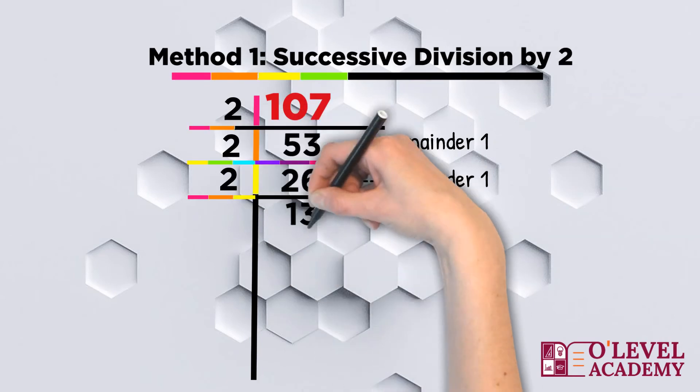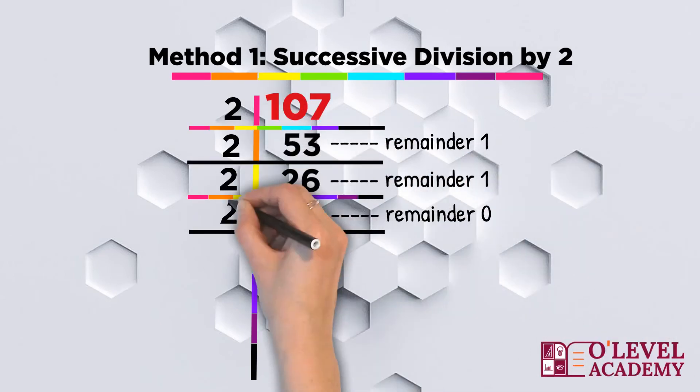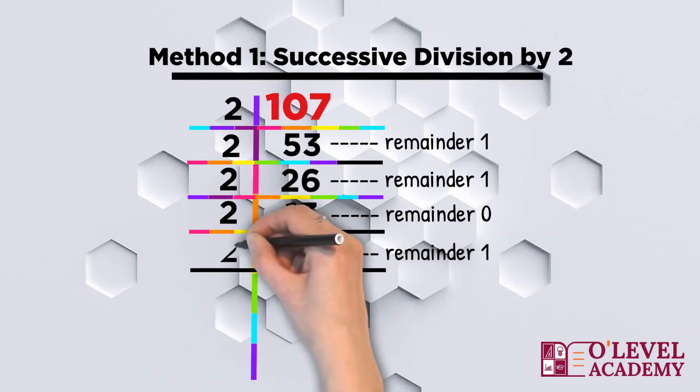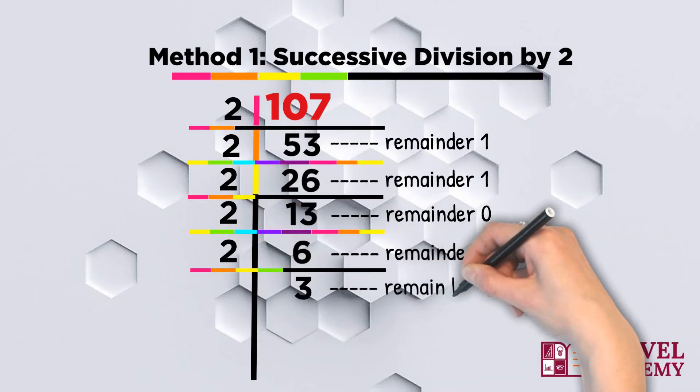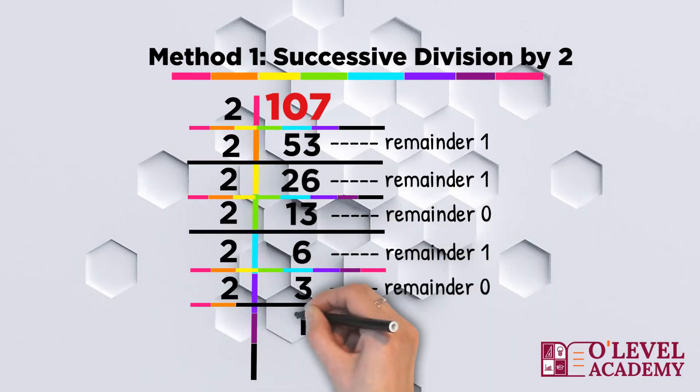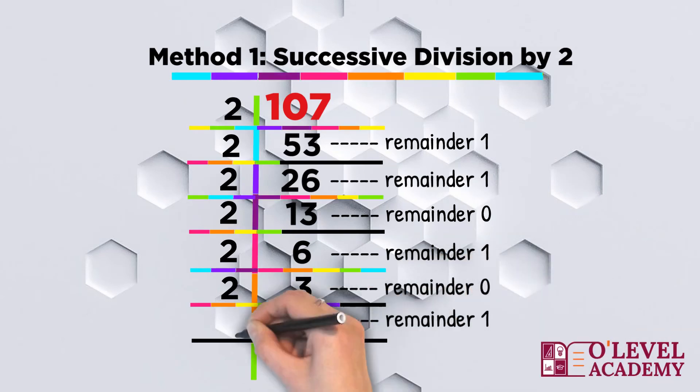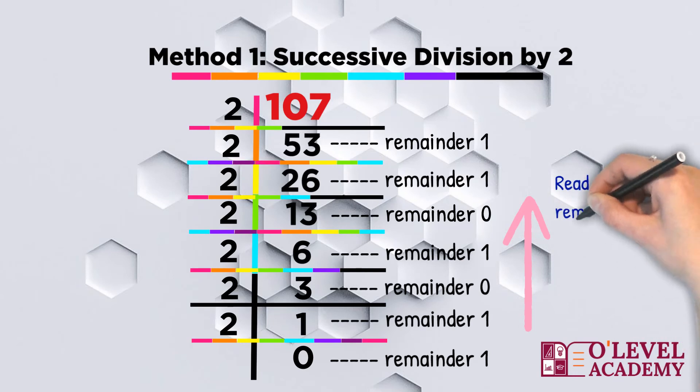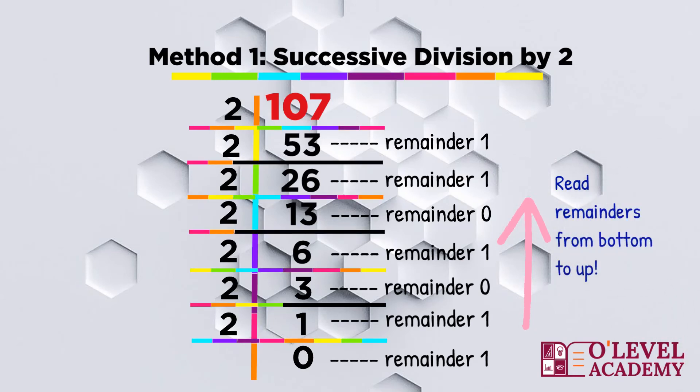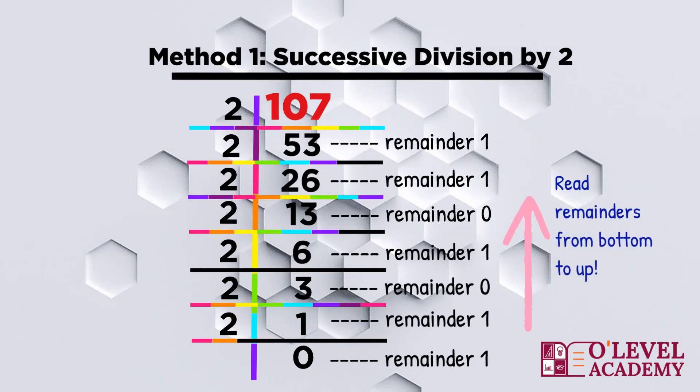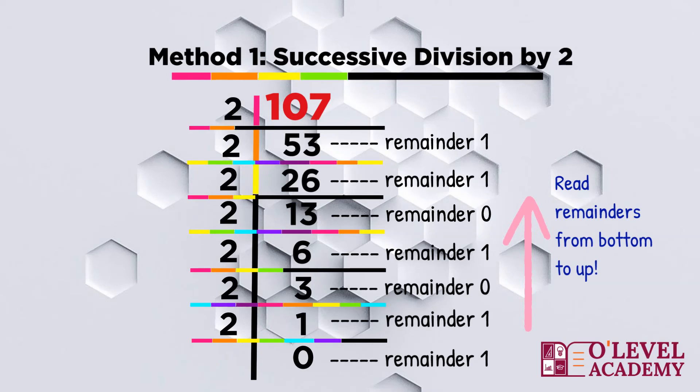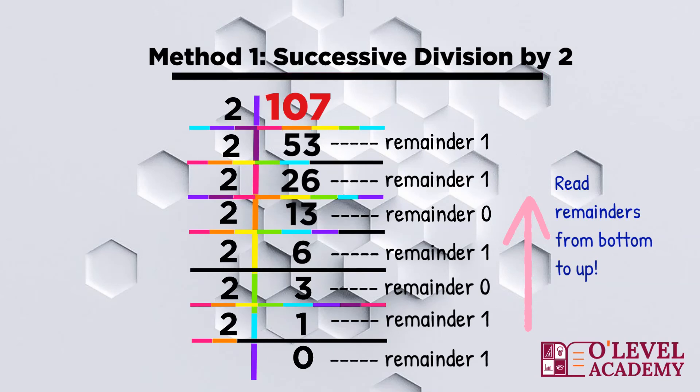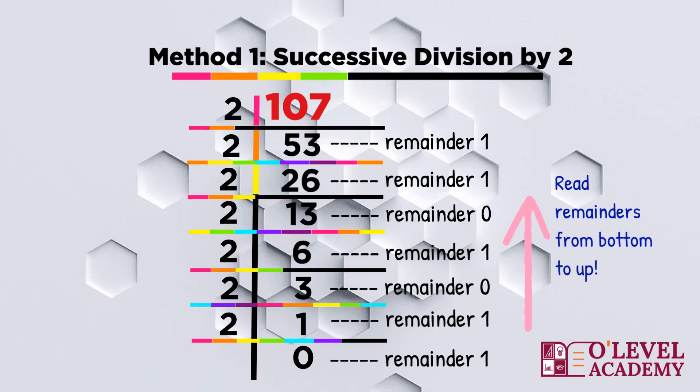We divided 107 by 2, it gave us 53 and remainder 1. 53 divided by 2 gave us 26 and remainder 1. 26 divided by 2 gave us 13 and remainder 0. 13 divided by 2 gave us 6 and remainder 1. 6 divided by 2 gave us 3 and remainder 0. 3 divided by 2 gave us 1 and remainder 1. 1 divided by 2 gave us 0 and remainder 1.